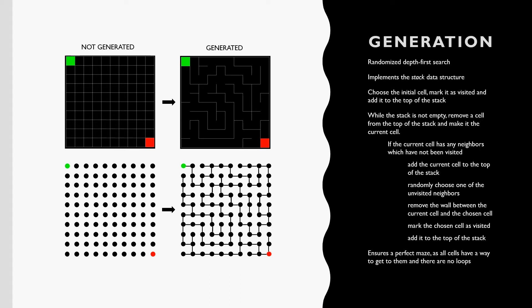The algorithm starts by picking an initial cell, marking it as visited, and adding it to the top of the stack. In our case, I chose the top left node as our starting cell. Now, while the stack is not empty, we remove a cell from the stack and set that as our current cell.